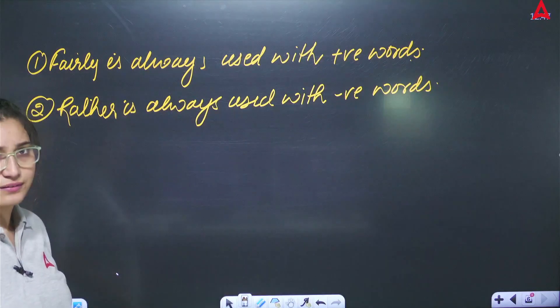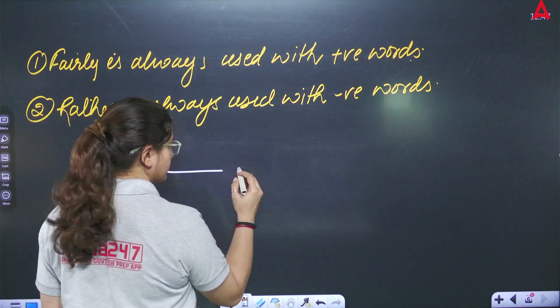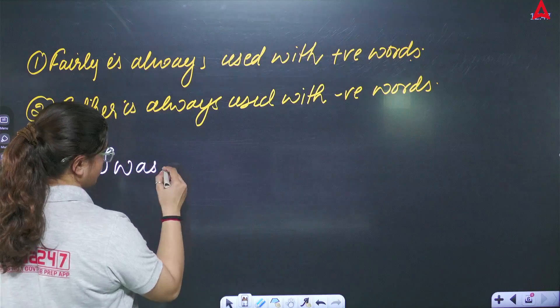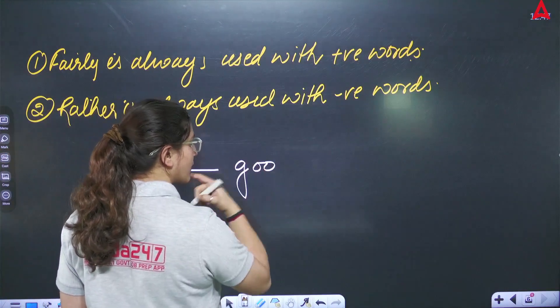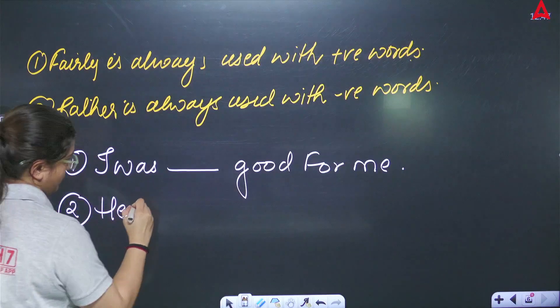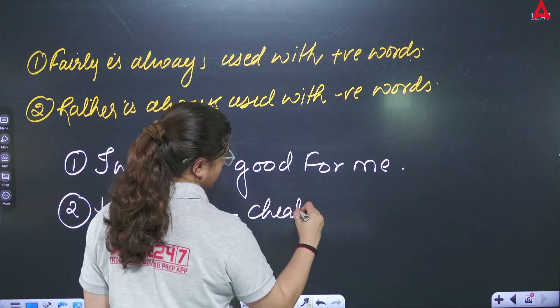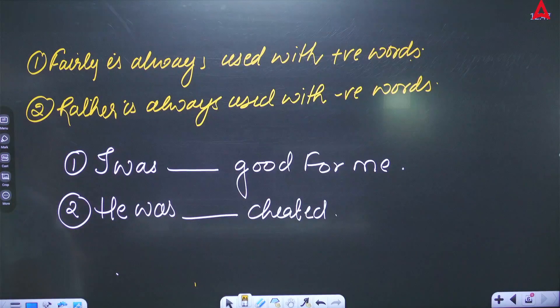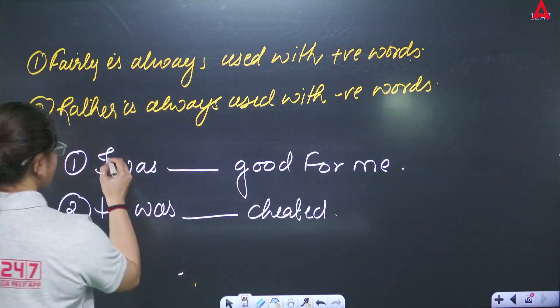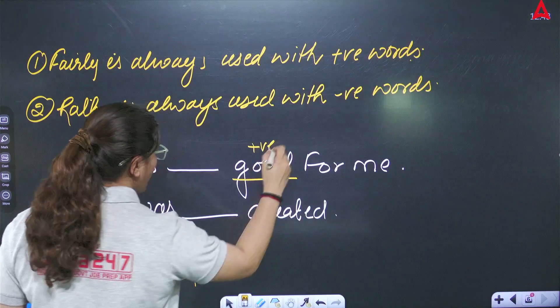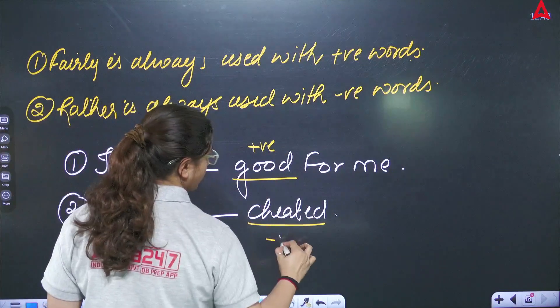Now just suppose I have written: it was dash good for me. He was dash cheated. Okay? So if you can see both sentences, then although you can see no 'not' words, but if you can identify it was good for me - good for me, we can say this is a positive word, whereas if we look at the word cheated, cheated is a negative word, right?